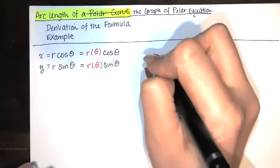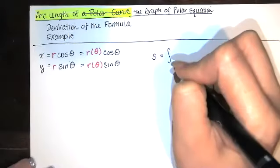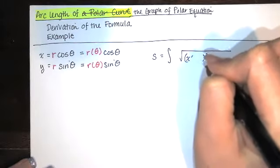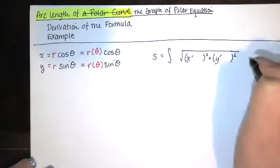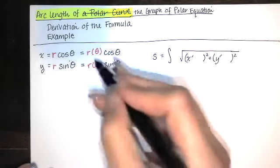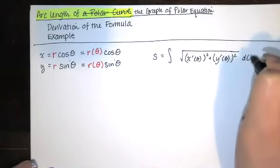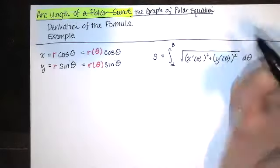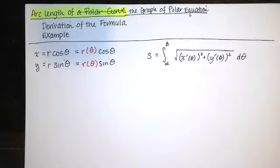Remember when we found arc length for parametric equations, we said take the integral from a to b of the square root of x prime squared plus y prime squared dt. But now instead of our parameter being t, we can use the parameter theta instead. So this is x prime of theta, y prime of theta, d theta, and we integrate from some value of theta to some other value of theta. This is the right integral, but it simplifies significantly.